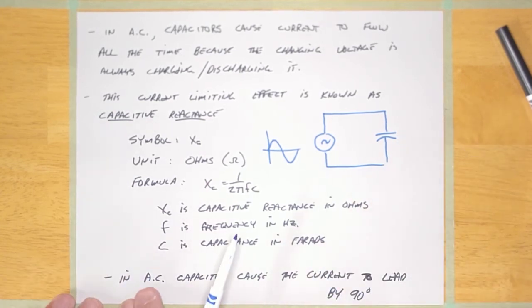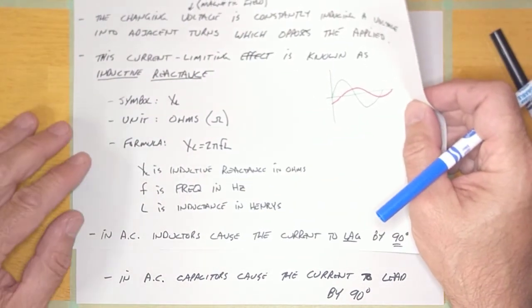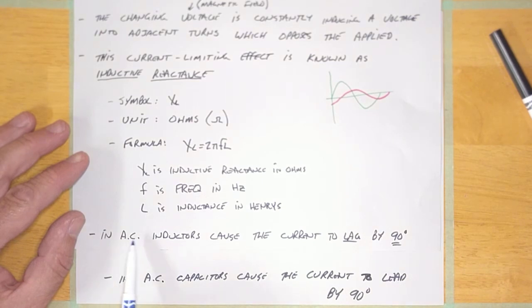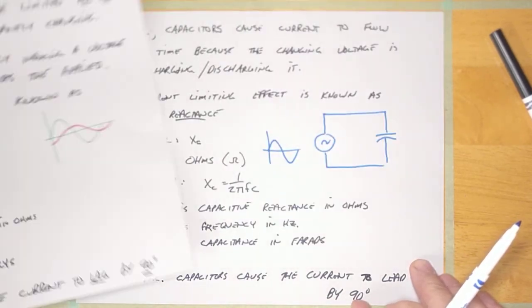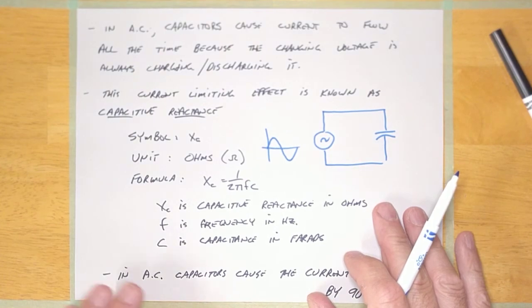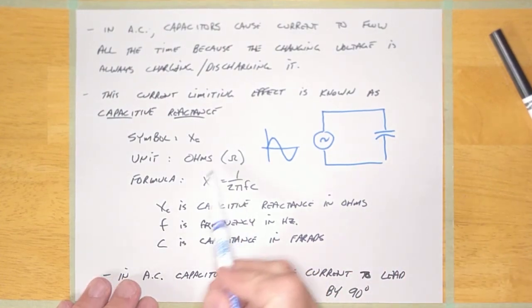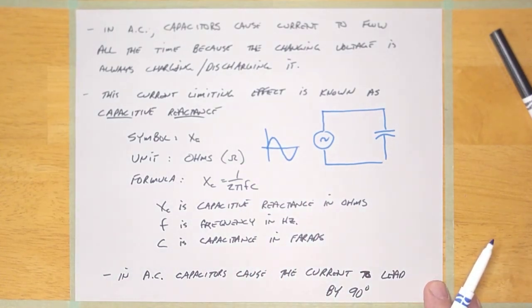In AC, capacitors cause the current to lead the voltage by 90 degrees, which is the opposite of inductors. In AC, inductors cause the current to lag the voltage by 90 degrees. So everything about a capacitor is opposite to an inductor. We're going to stop this video here, and in the next video I'm going to take up a little question and try this formula out to make sure we know how to use it. Hang in there and come back for the next video. Thanks.